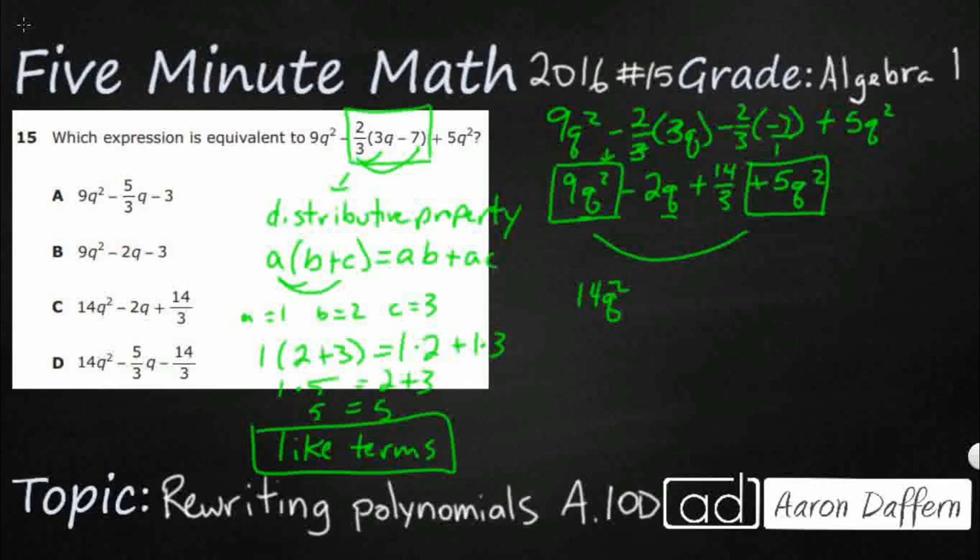And then we typically write them in descending order. So by exponents. So that's got an exponent of 2. This minus 2Q has got an exponent of 1, which we typically don't write. And then we've just got the 14 thirds. And yeah, we are going to take a look. And our answer here is C.